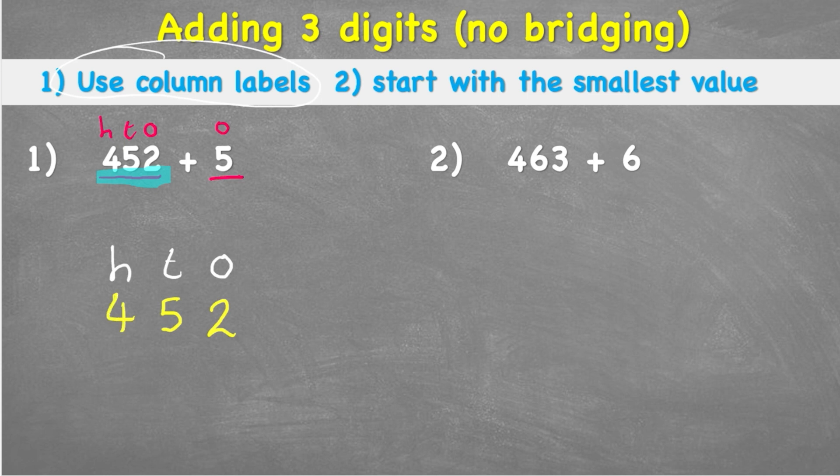So I put the 4 in the 100s column. Now I can look at my 5 and I see that that's in the 1s column. So I'm going to put it here underneath the 2. Now this is where a lot of people could make a mistake because we're so used to looking from left to right that some people put the 5 all the way over here. And we know that's not right because that's saying that this 5 is now in the 100s column representing 500, which it's not. It's only a 5.